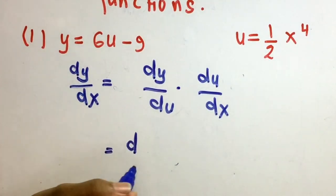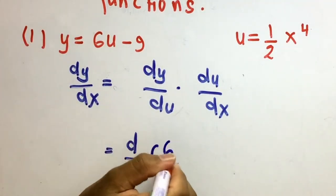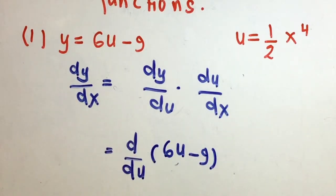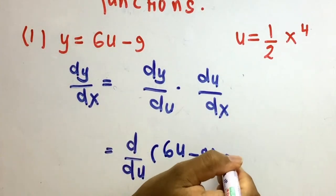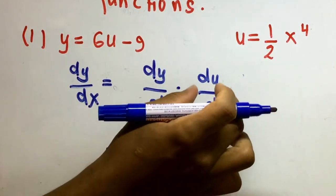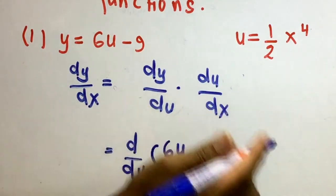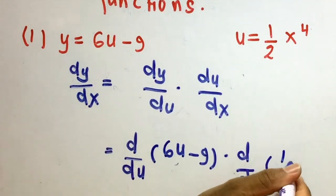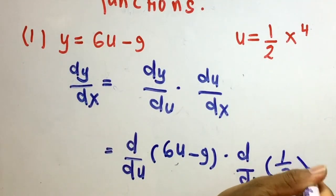So we have dy/du of the function y, which is 6u minus 9. We need to find the derivative of 6u minus 9 with respect to u, and then d/dx of the function u, which is one-half x to the power of 4.